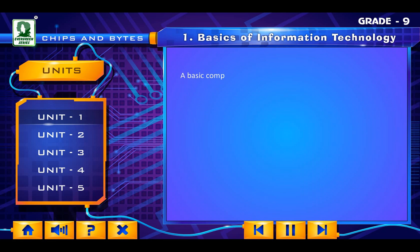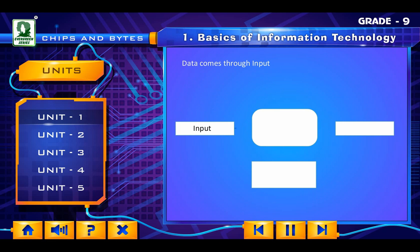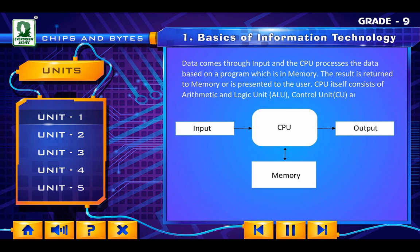A basic computer consists of three components: CPU, i.e. Central Processing Unit; IO, i.e. Input-Output; and Memory. Data comes through input and the CPU processes the data based on a program which is in memory. The result is returned to memory or is presented to the user. The CPU itself consists of Arithmetic and Logic Unit, i.e. ALU, Control Unit, i.e. CU, and Registers.